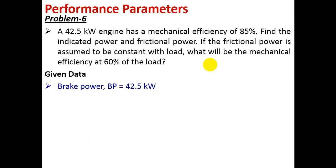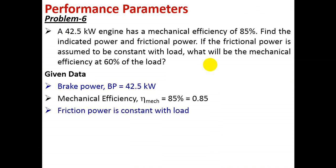Given data: brake power BP is equal to 42.5 kilowatt, mechanical efficiency equal to 85 percent. Converting this into a fraction, it is 0.85. It is also given that friction power is constant with load. That is all about the given data.